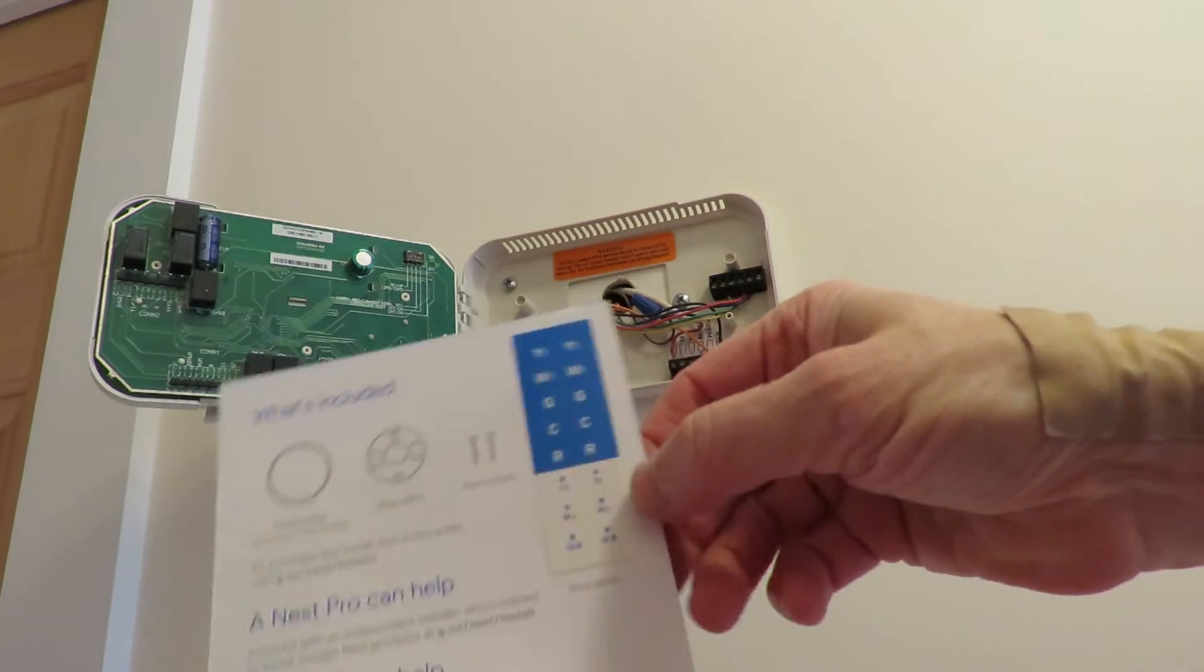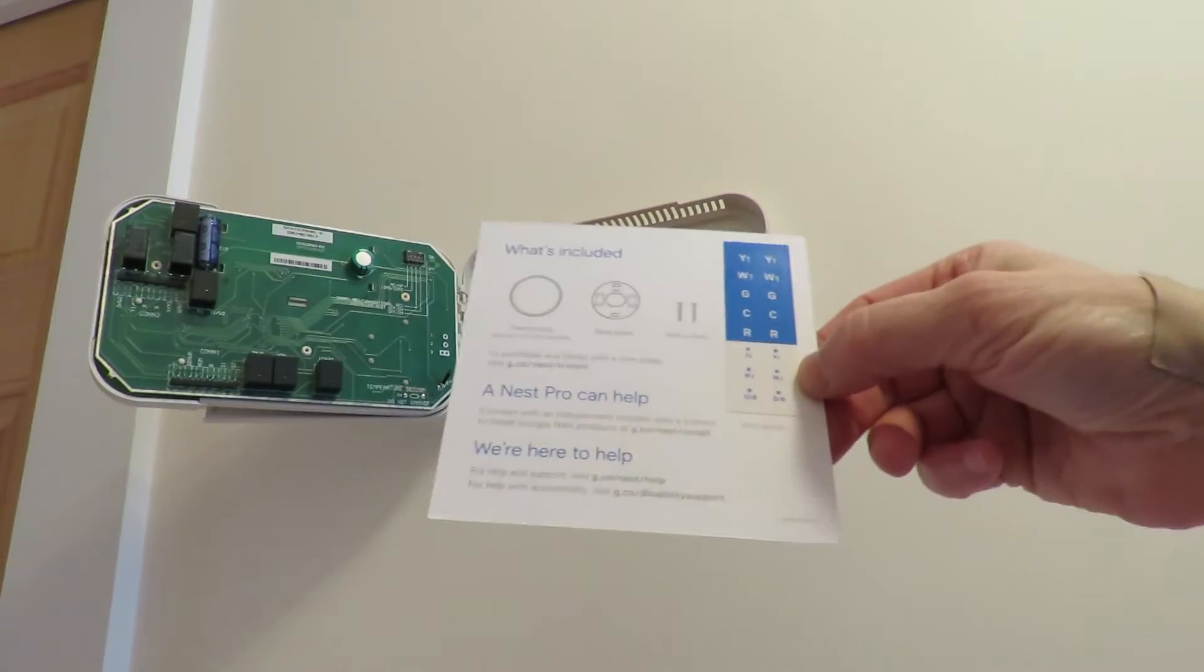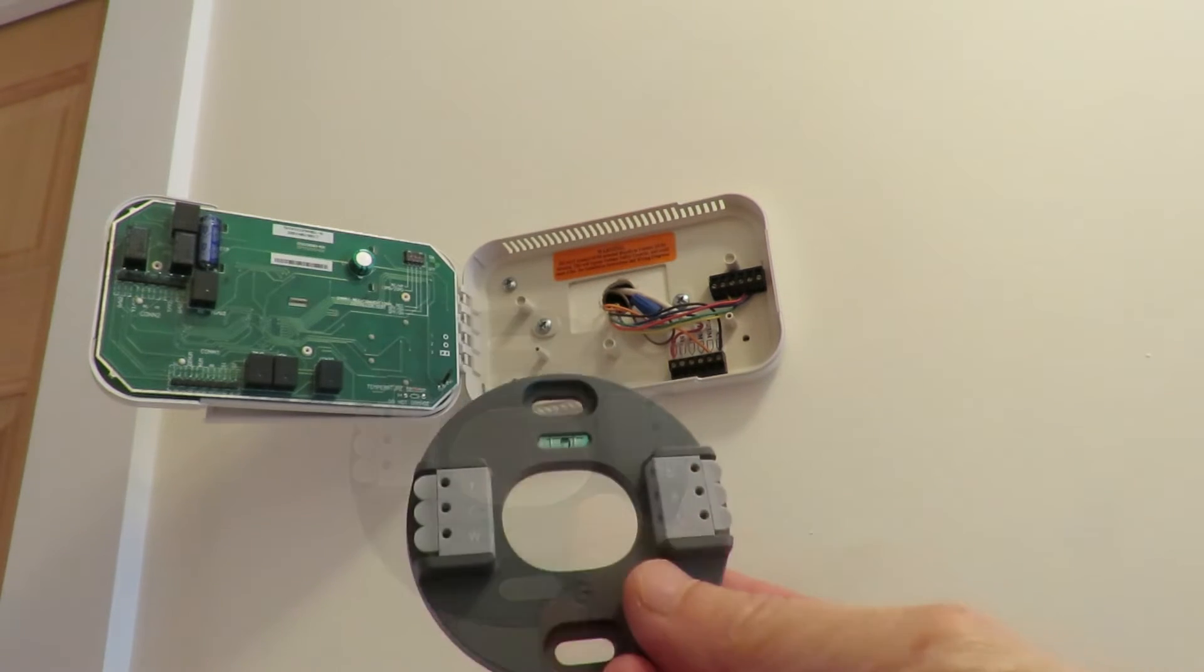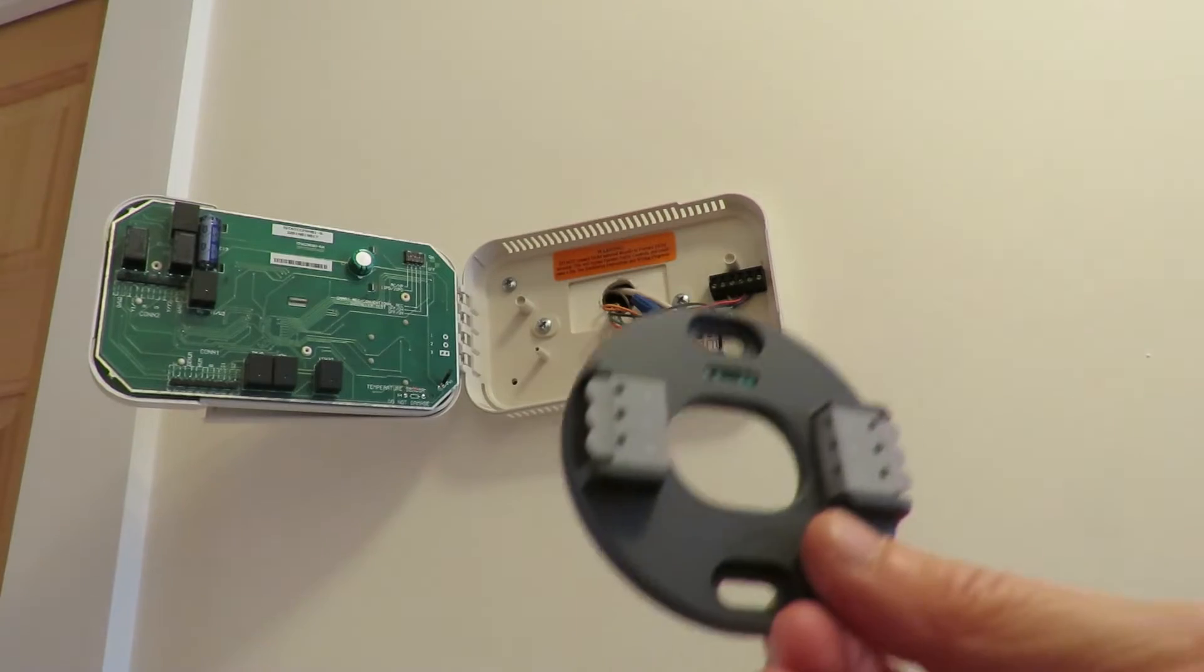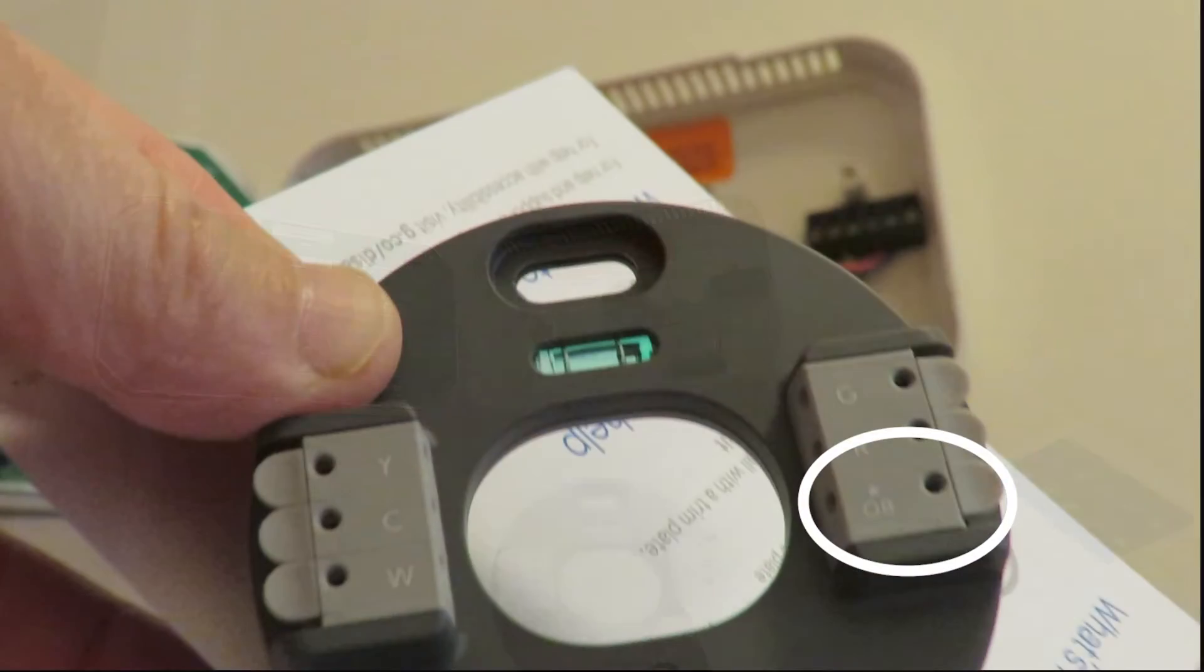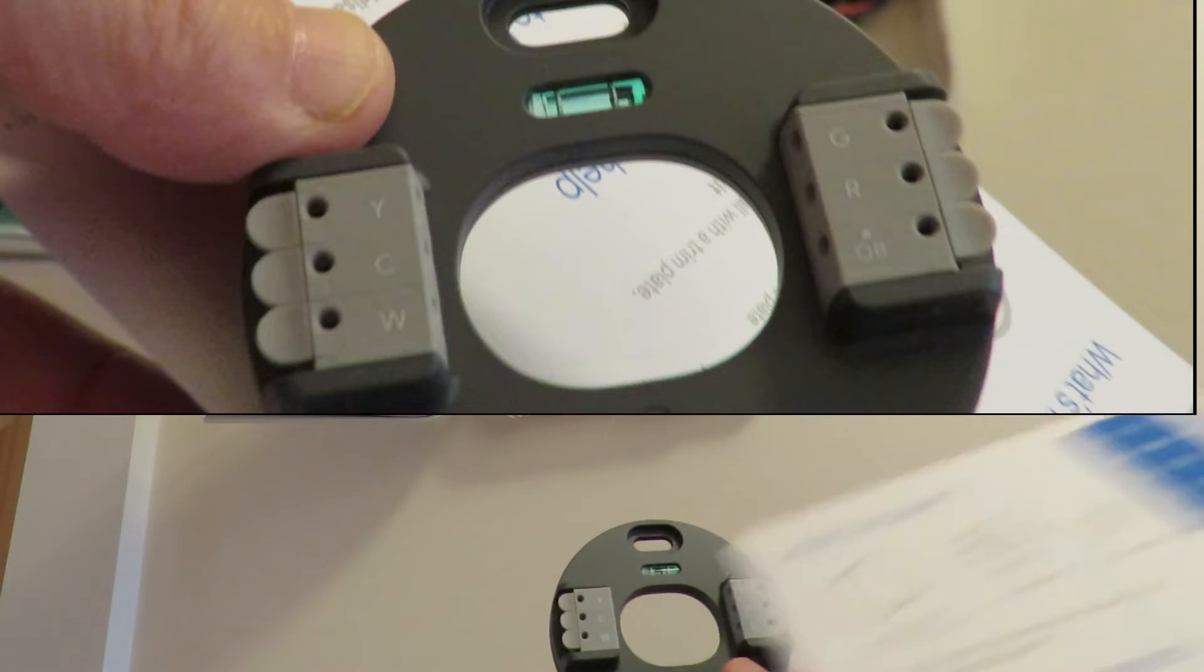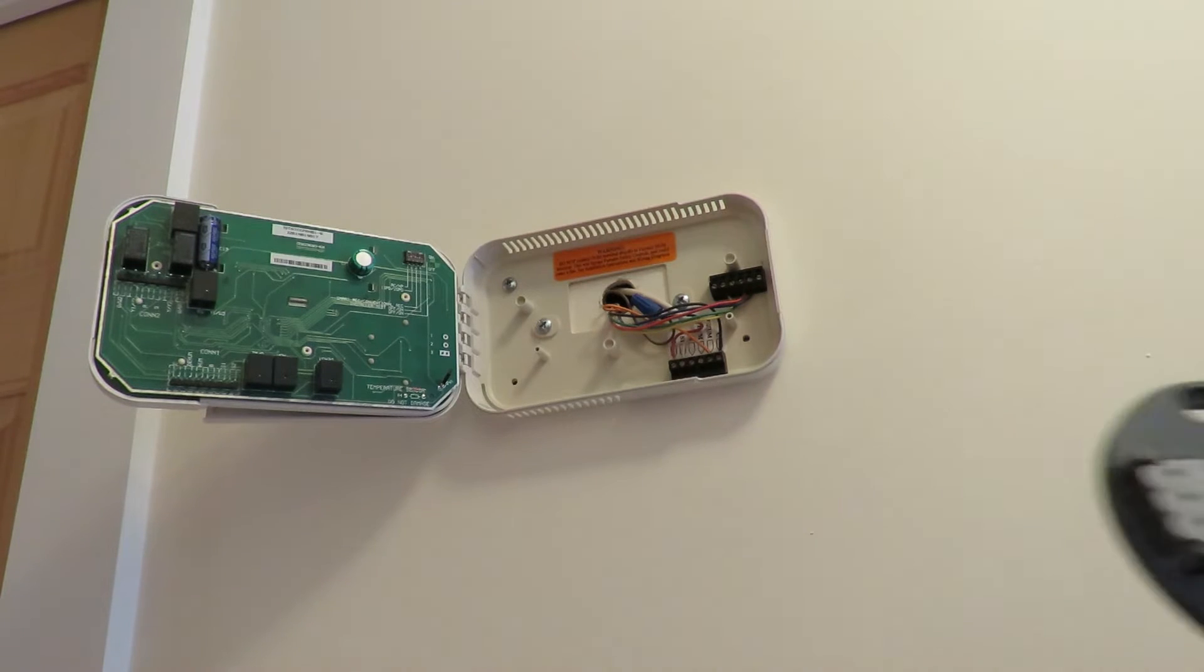You can only use one star sticker here on the Nest thermostat because when you look at the Nest here, what you can see is it has a G, R, and a star here. And then it's got your Y, C, and W. So I have to figure out where these wires go. This is my next task.